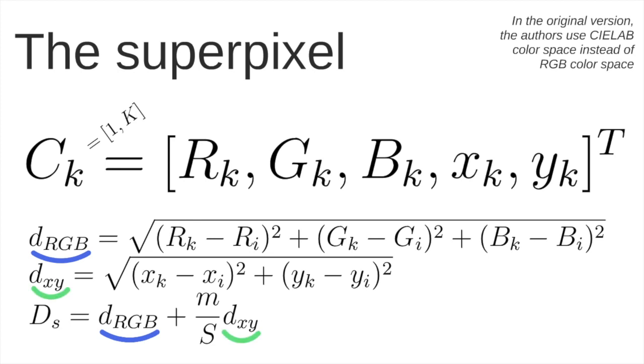And also we have this part here, which is the distance in the XY space. Euclidean distance, but now considering the coordinates of every pixel. This way we consider the color part and also the location of every pixel to measure if they are similar or not.